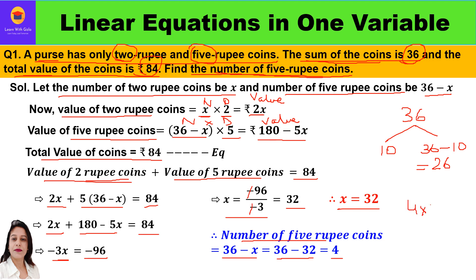We can verify: 4 coins of 5 rupees gives a total money value of 20 rupees, and 32 coins of 2 rupees gives 32 times 2 which is 64 rupees. The total is 84. So 84 is the total value — 20 rupees from 5-rupee coins and 64 rupees from 2-rupee coins — and the total is rupees 84.